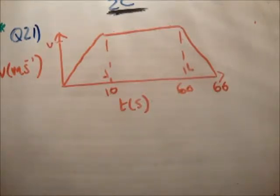The time taken is 66 seconds, the first 10 seconds it is Uniform Acceleration A1, then travels at constant speed and is finally brought to rest by Uniform Deceleration A2 acting for 6 seconds. Calculate the accelerations.